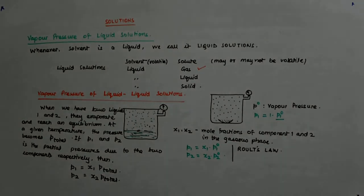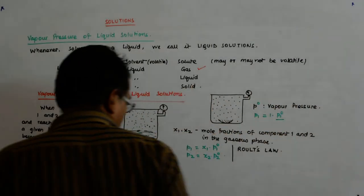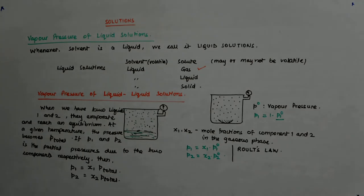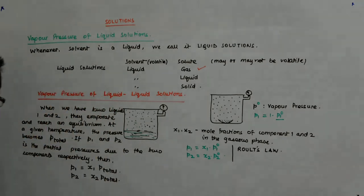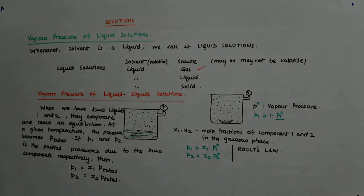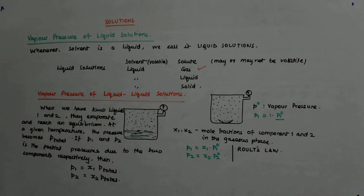So our partial pressure is this, and this is Raoult's Law. Raoult's Law says that for a solution of volatile liquids, the partial vapor pressure of each component of the solution is directly proportional to its mole fraction present in solution.